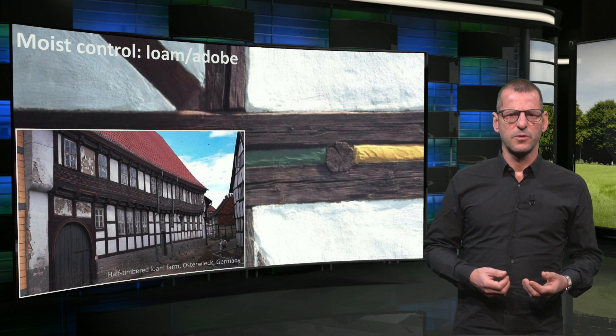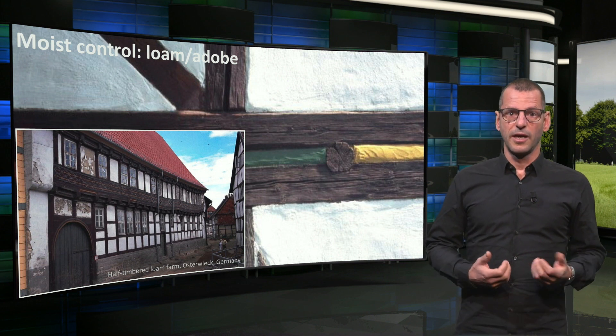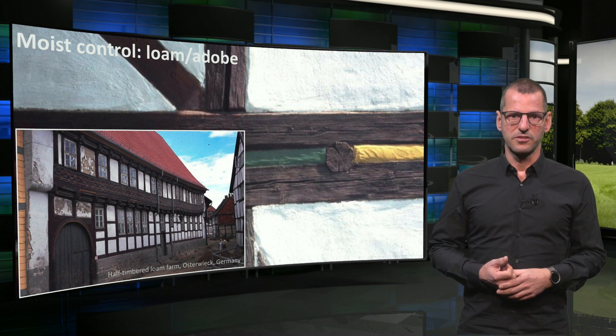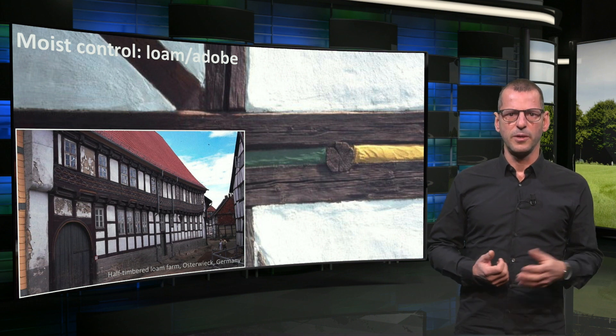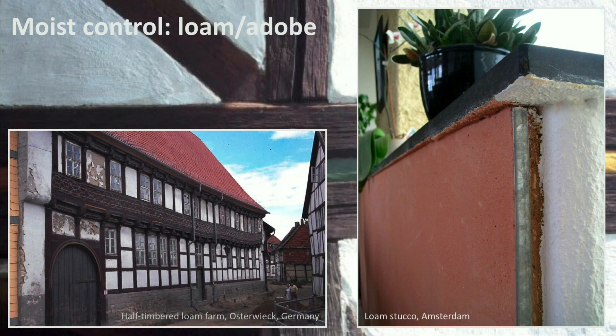A different challenge with water is moisture, in the form of humidity. Loam, or adobe, has been a building material for ages, for typical wattle and daub, or half-timbered buildings. Less known is that loam can regulate humidity. If a space has a high relative humidity, loam will absorb water vapor from the air. If the air is relatively dry, the material will release moisture to the air, of course within limits. This makes loam suited for indoor stucco plasterwork.